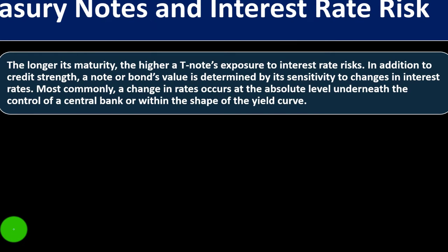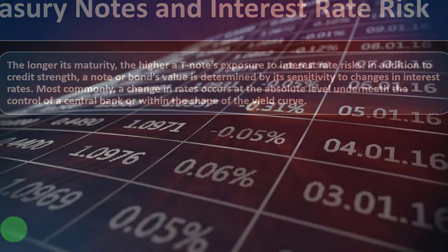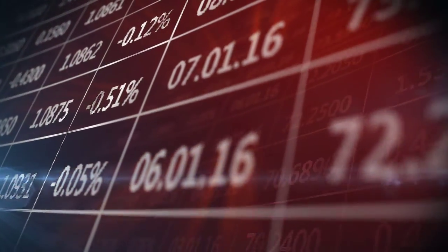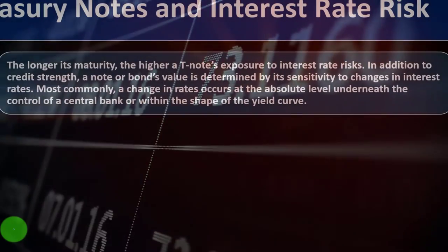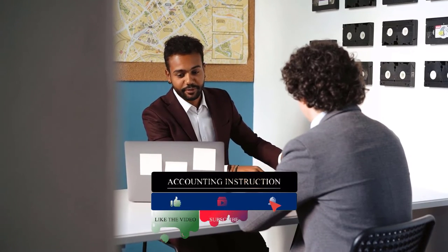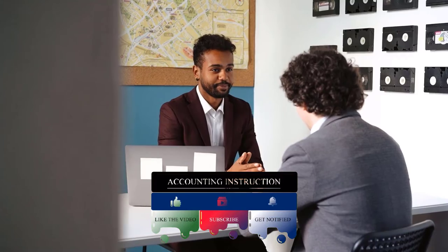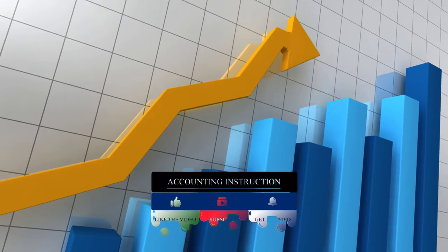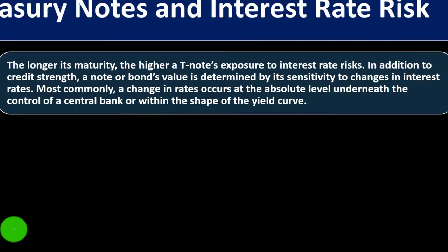Treasury notes and interest rate risk: the longer its maturity, the higher a T-note's exposure to interest rate risk. Interest rate risk is the risk that market interest rates go up while you're locked into a fixed income arrangement. If you've loaned money at a fixed return and market rates rise, you could have gotten a higher return elsewhere — but you're locked in. Conversely, if market rates fall, being locked in to a higher rate is beneficial.